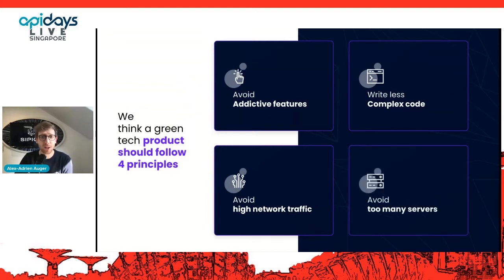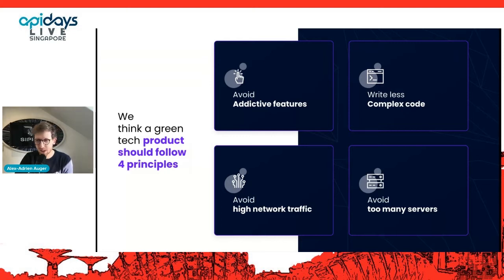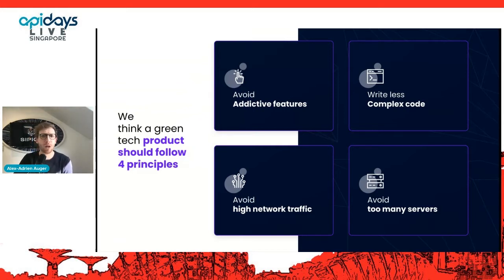And the fourth and last principle is: avoid too many servers. I love that one because it sounds like a magical one — it sounds so simple, but of course it isn't. It might sound crazy simple to just turn off a server when you're not using it, but it took time for the tech industry to be able to do it correctly. And that is actually the most visible principle in the industry right now. Companies are considering moving to cloud computing because it allows them better control on their costs, and since costs are indexed to the computing usage of your account, it is often linked to the green impact.